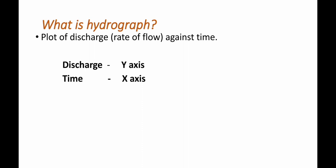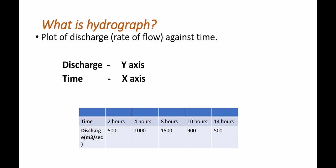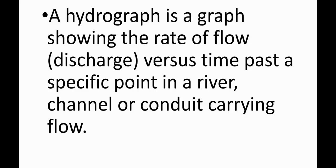at different times. Suppose at 2 hours from starting, discharge is 500 m³/sec. At 4 hours, it is 1000 m³/sec. At 8 hours, 1500 m³/sec. At 10 hours, 900 m³/sec. And at 14 hours, 500 m³/sec. We plot these points on the graph, and this graph is called a hydrograph.